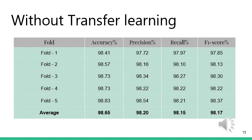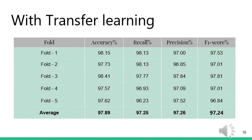I will now present the results of our research. This table shows the results obtained under the approach of not using transfer learning. For each fold of the 5-fold cross validation, an average accuracy of 98.65 percent and an average recall of 98.2 percent was achieved. For the other approach using transfer learning, an average accuracy of 97.89 percent and a recall of 97.25 percent was achieved.